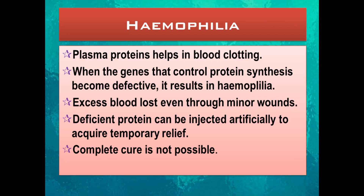In summary, hemophilia occurs when the genes that control the synthesis of proteins which help in blood clotting become defective. The symptom is excess blood loss even through minor wounds. Injecting the particular protein artificially can provide temporary relief and save the person's life, but complete cure is not possible.